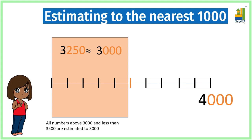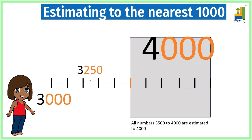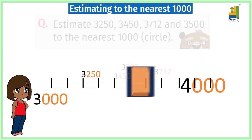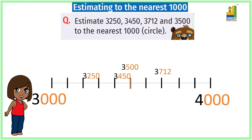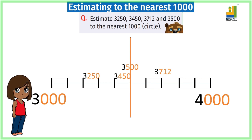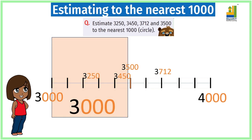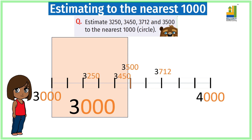All numbers above the midpoint — here, 3500 — will be estimated to the upper thousand. Now that we understand estimating to the nearest thousand, let us solve for the other numbers as well. Notice that two numbers, 3250 and 3450, are below the midpoint. 3500 and 3712 are on or above the midpoint. So, 3250 and 3450 are estimated to 3000.